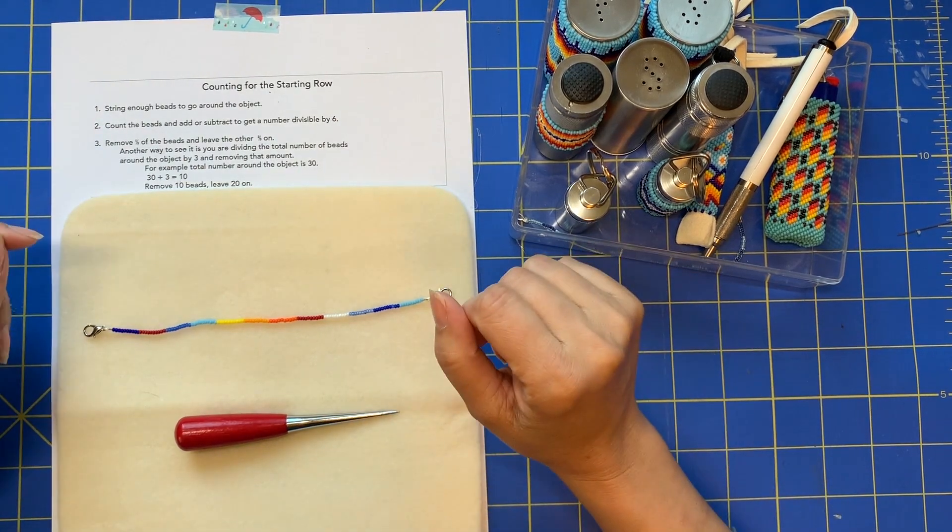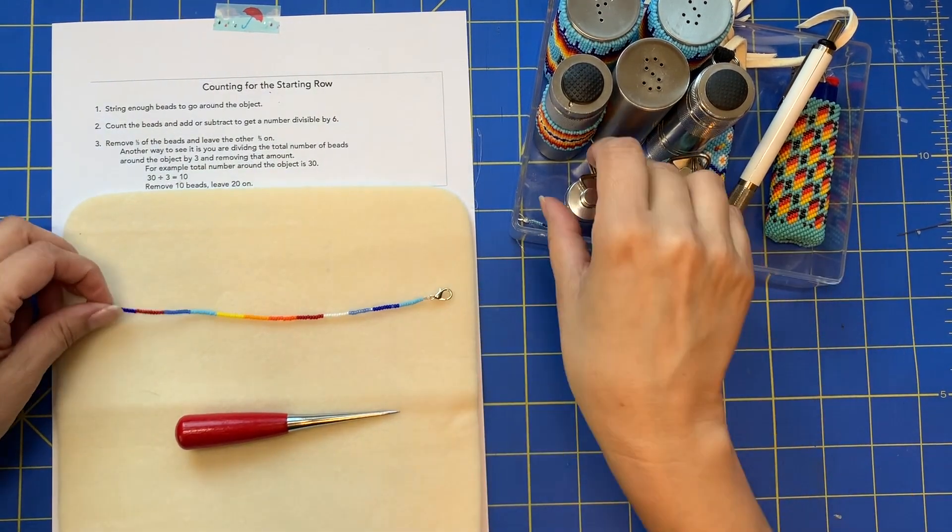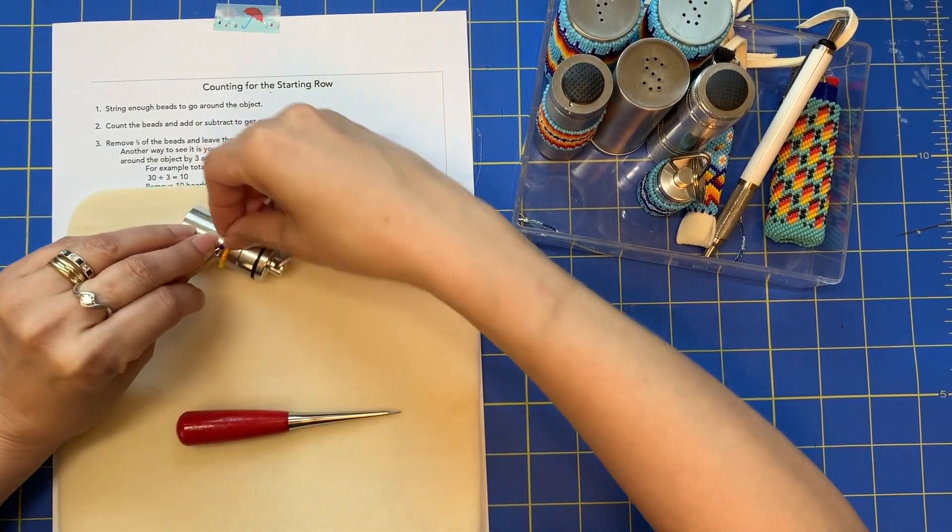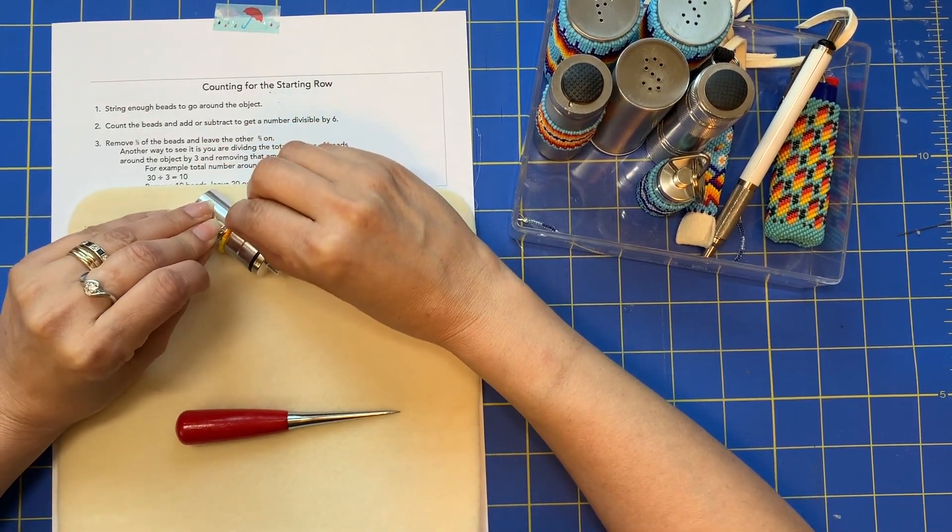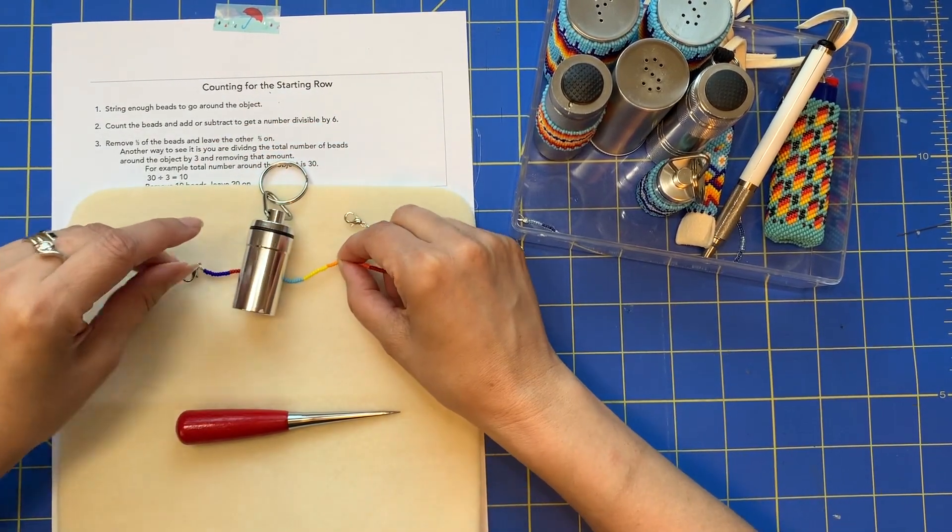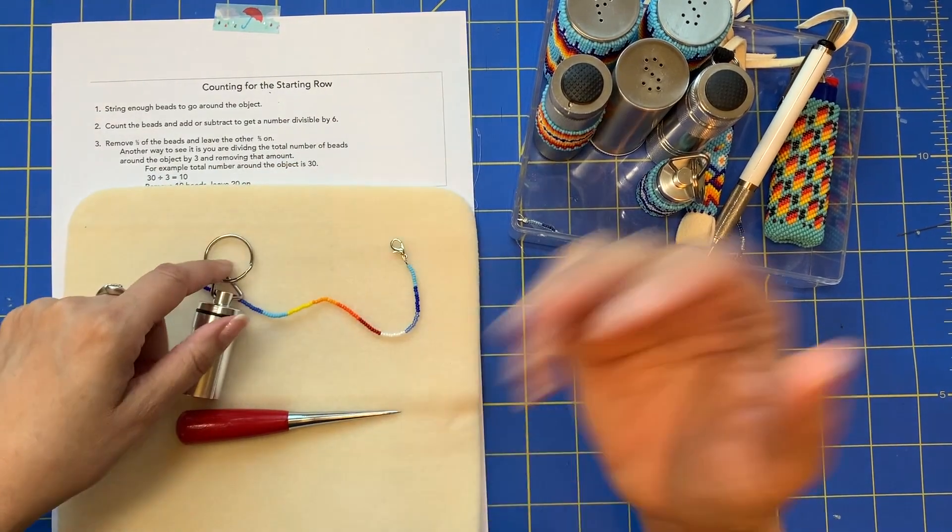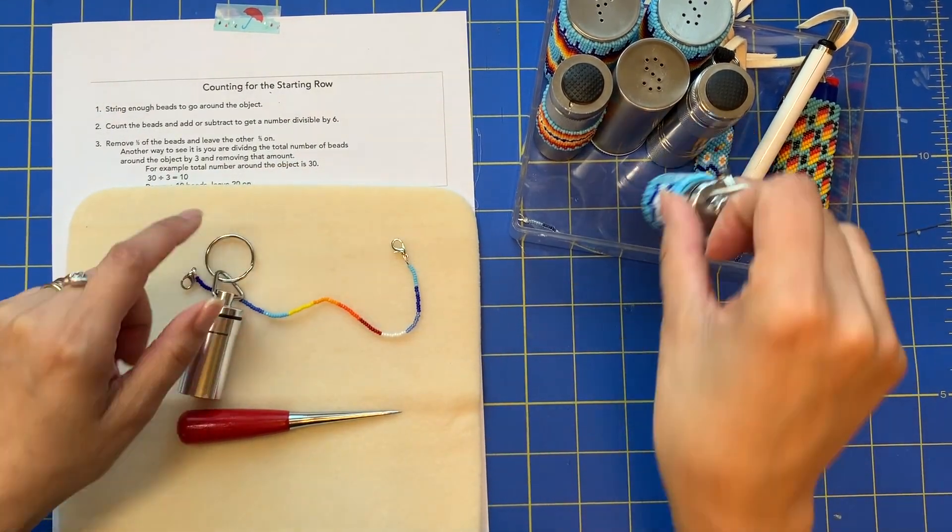So how do you get the count for the starting row? Well, you string enough beads to go around your object and then you add or subtract enough beads to get to a number divisible by six.